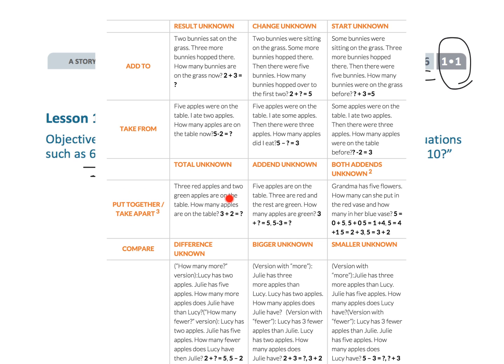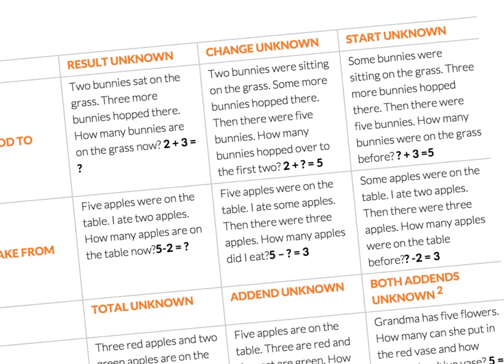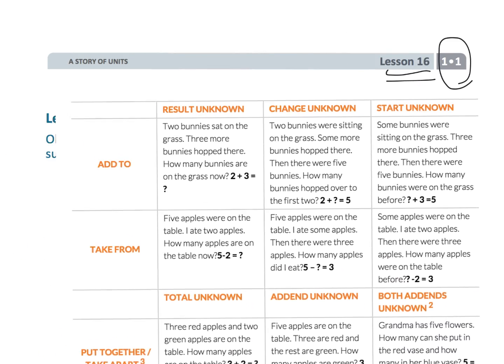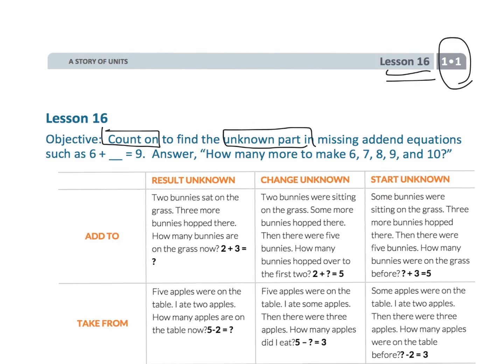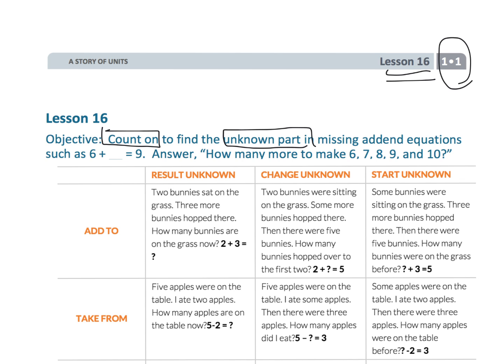Down here you can have put together which also suggests addition, right, where you have the total unknown or the addend unknown or both are unknown. And the way I'm seeing this is in these lessons we're going to be largely looking at this right here, where it's the add to and it's the change that's unknown. So if I were to be a betting man, it's these kinds of problems that we're really kind of focusing on in this lesson.